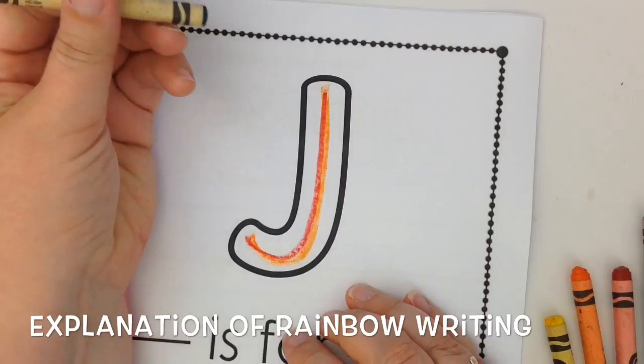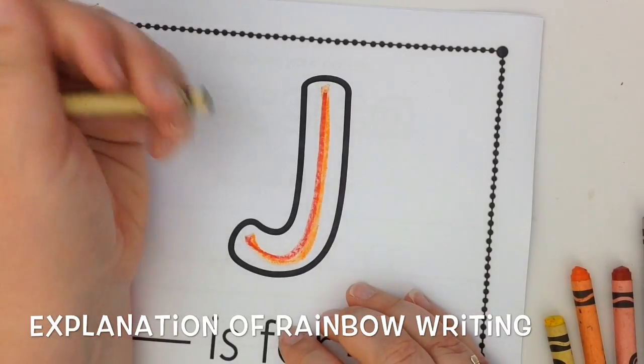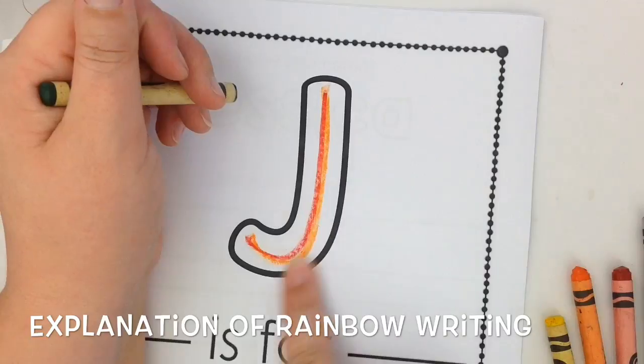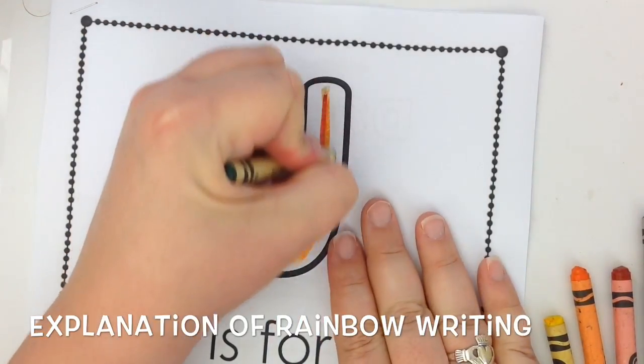It's important as they're doing each of these strokes that they're doing it in the proper way. My J starts at the top and goes down. Green comes after yellow.